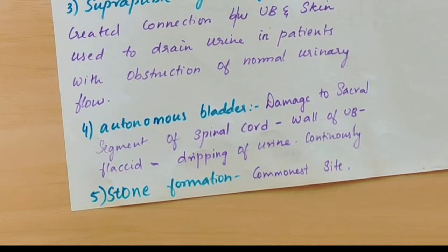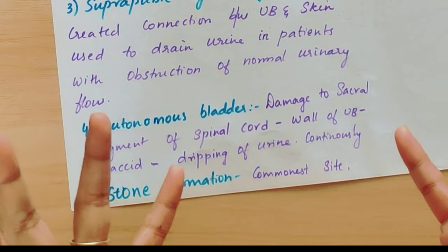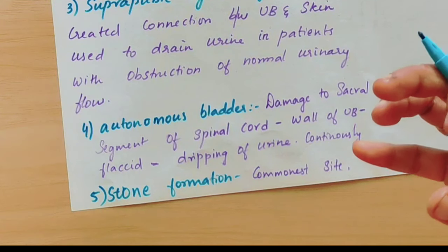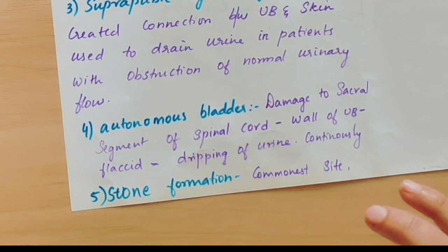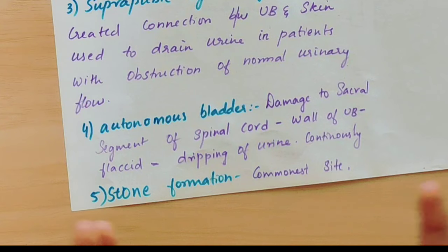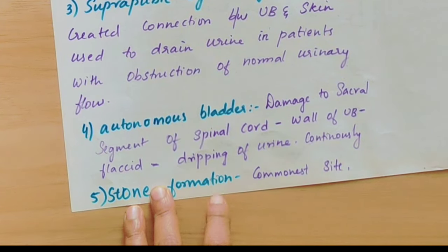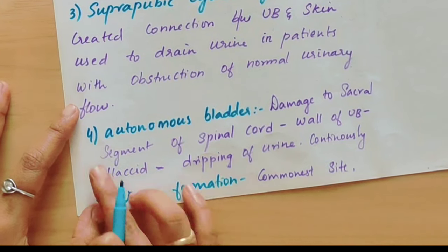Next is the autonomous bladder. Normally, when the urinary bladder stretches due to fluid, stretch receptors send a signal via nerve endings to the spinal cord, which controls micturition — the passing of urine. However, if the sacral section of the spinal cord is damaged, there is no proper nervous supply to the urinary bladder. As a result, the bladder muscles become flaccid and weak. The stretch receptors still send signals but there is no proper response, causing urine to drip continuously without voluntary control. This is called an autonomous bladder.